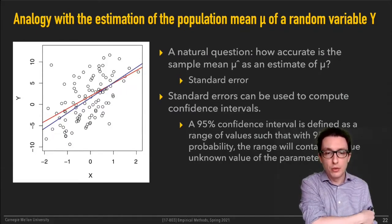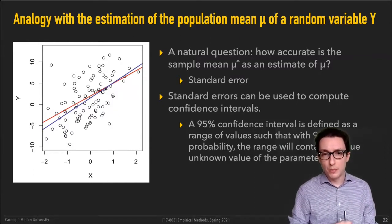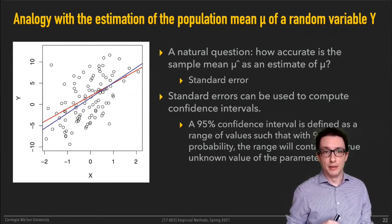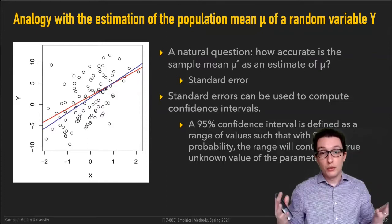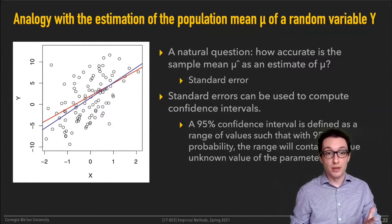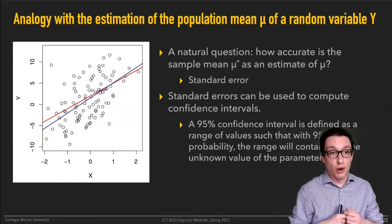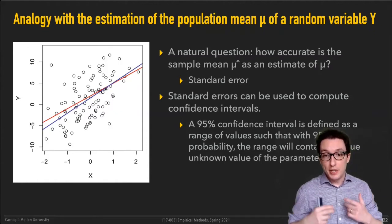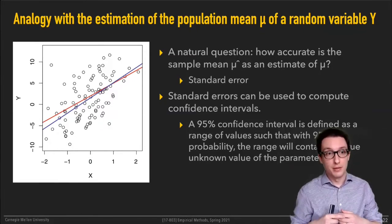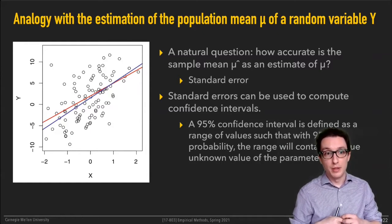This is analogous to estimating the population mean of some random variable. This is where the notion of standard errors comes in. You can't measure the actual population mean, but you can measure the mean of some sample drawn from the population. Then you reason about the standard errors of your sample mean estimates, and those tell you about how far off you are from the true mean. This is also where the idea of confidence intervals comes in — a 95% confidence interval is defined as a range of values such that with 95% probability, the range will contain the true unknown value of the parameter you're trying to estimate.